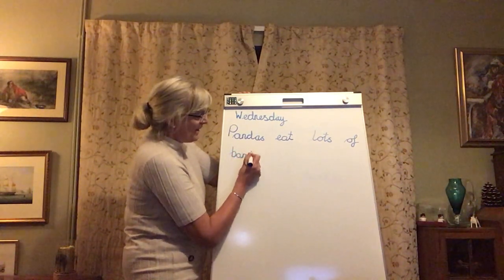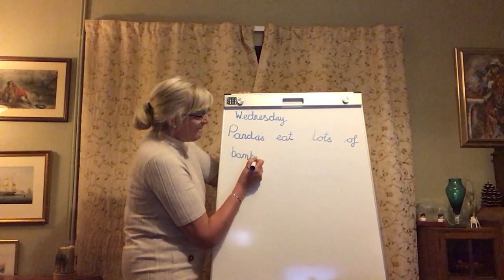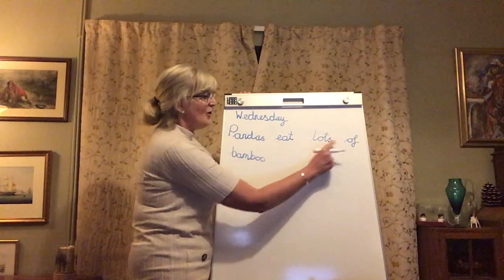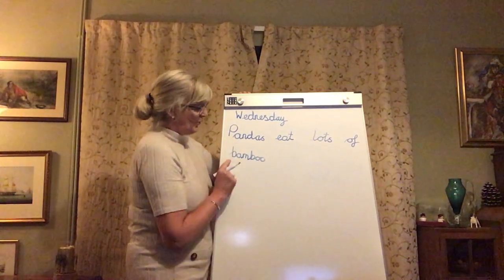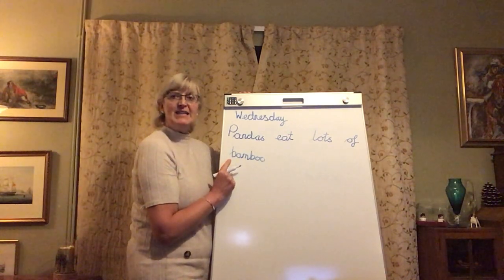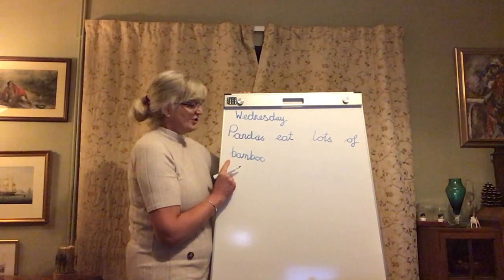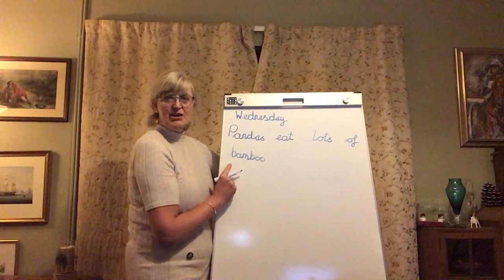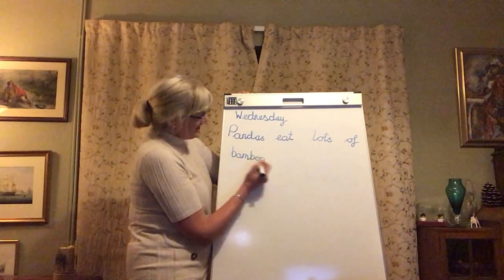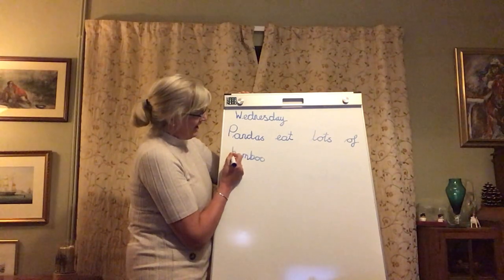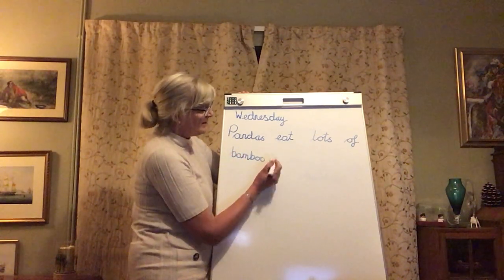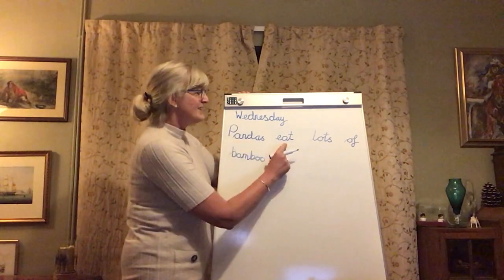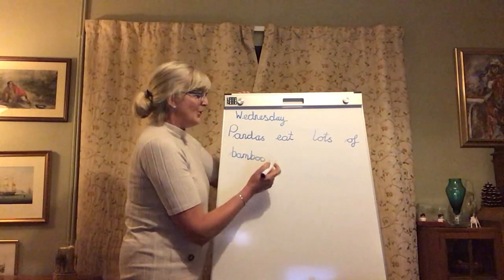Pandas eat lots of bamboo. Bam-boo. Pandas eat lots of bamboo. And my B here is not the beginning of a new sentence — just because it's on the second line doesn't mean it's the start of a new sentence, so I still have to use a lowercase B. But I end with a full stop. And I check that it's right. Pandas eat lots of bamboo.